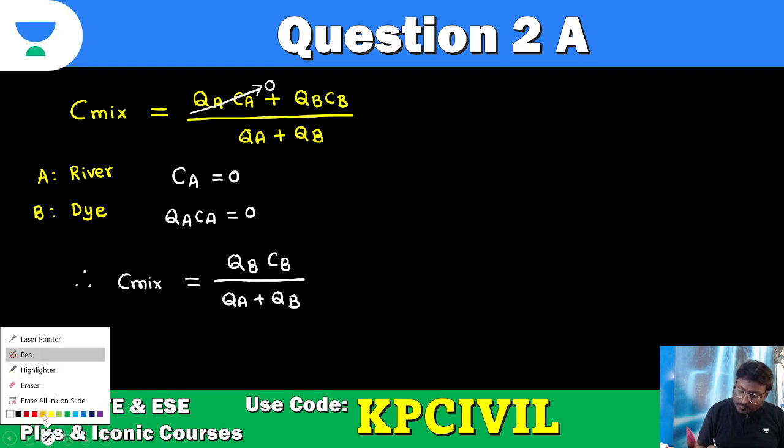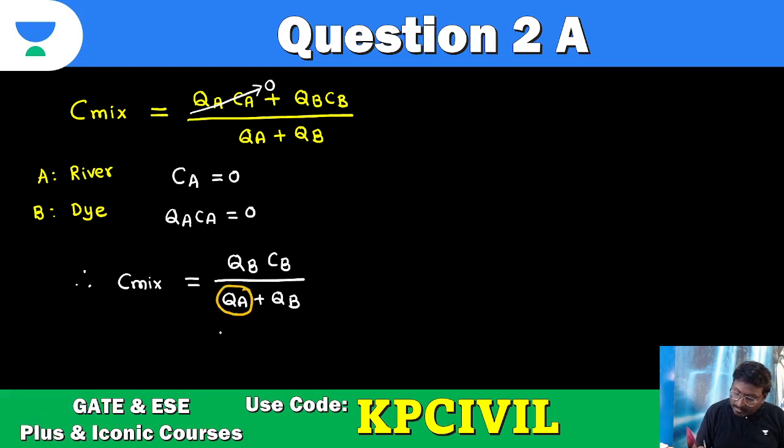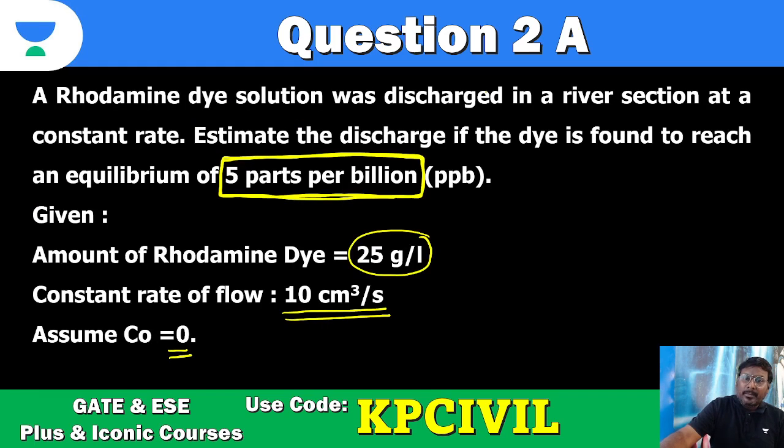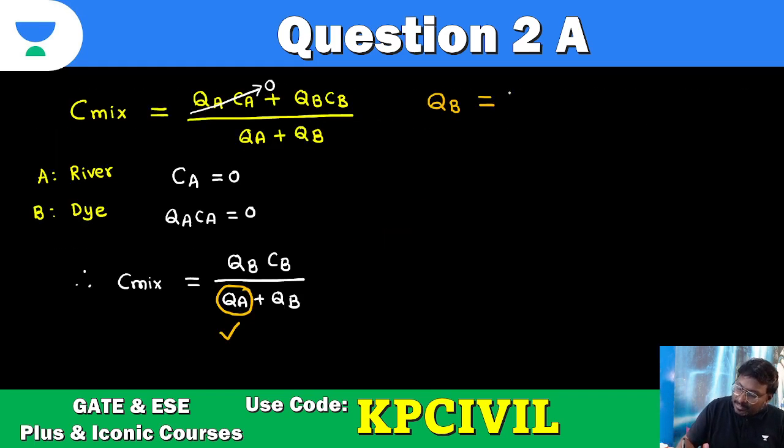What we need to find out? We need to find out Qa, river discharge. This is the only target. What data is given? Qb is provided - 10 centimeter cube per second, 10 cc per second. Then C mix is provided - 5 ppb, 5 parts per billion, which converts into 5 into 10 raised to minus 3 ppm, parts per million. We'll take it as mg per liter.